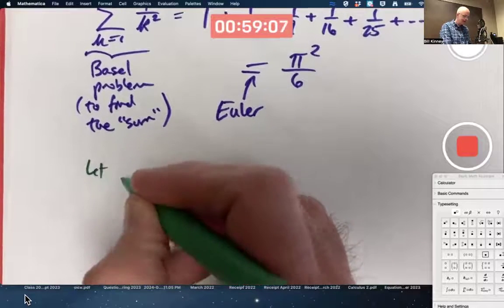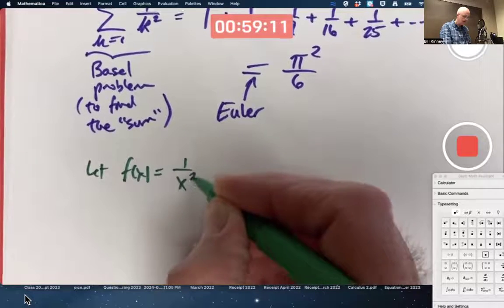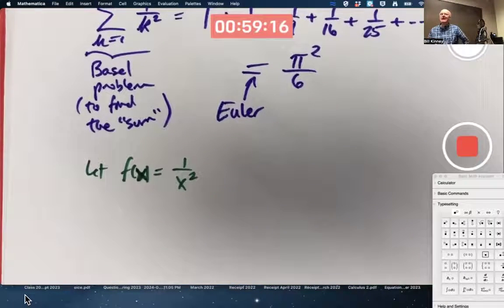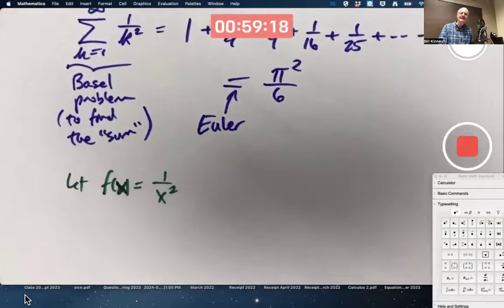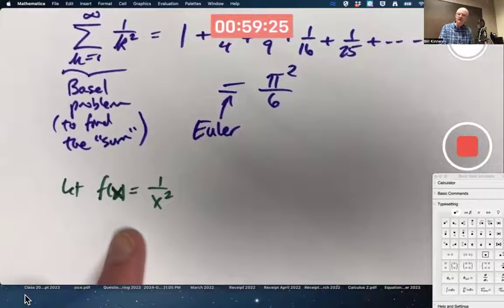Let's let f of x be 1 over x squared. What I'm going to do is I'm going to relate the infinite series, and whether it converges or not,